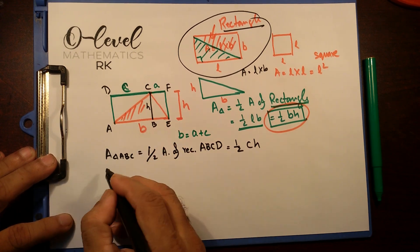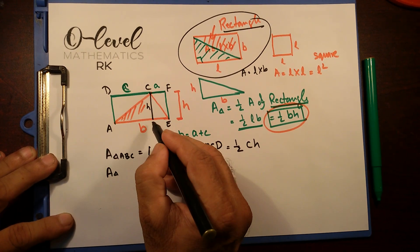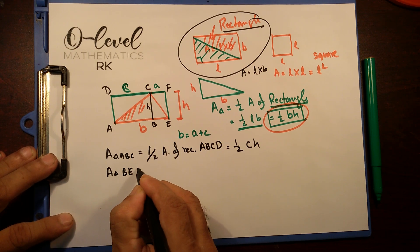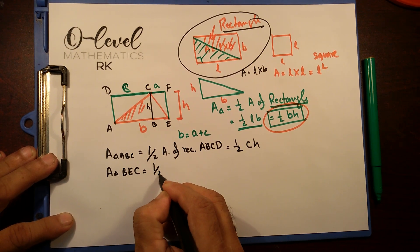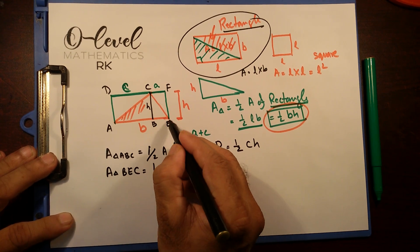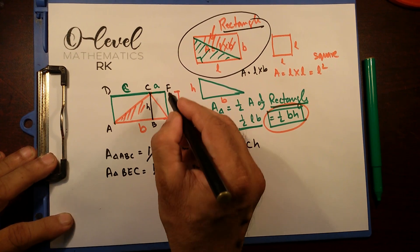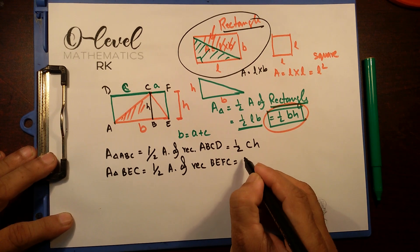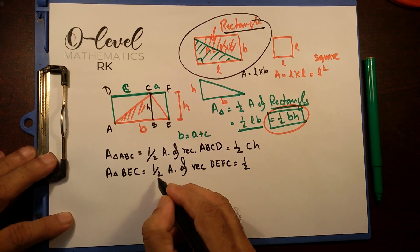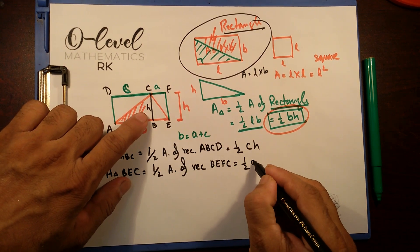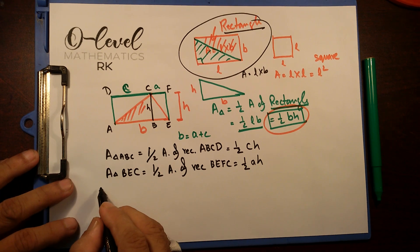Now, same rule applies for area of triangle BEC. And that's going to be half area of rectangle over here BEFC. And that's going to be half, this half here. And this is going to be A times H.